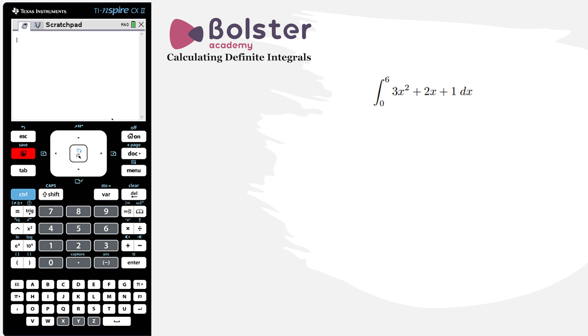We go into scratch pad and we hit the menu button. We hit calculus, option number 4, and we choose number 2 numerical integral. Now I just fill in all the information that I need.